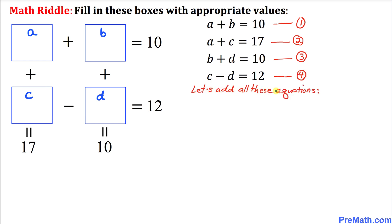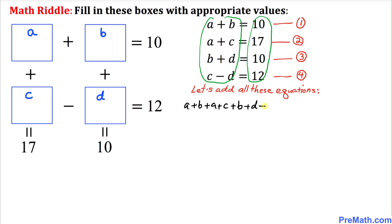Our next step is to add all four equations together. Adding the left-hand sides gives us: A plus B plus A plus C plus B plus D plus C minus D. On the right-hand side we add 10 plus 17 plus 10 plus 12. Combining like terms: 2A plus 2B plus 2C — the positive D and negative D cancel out.